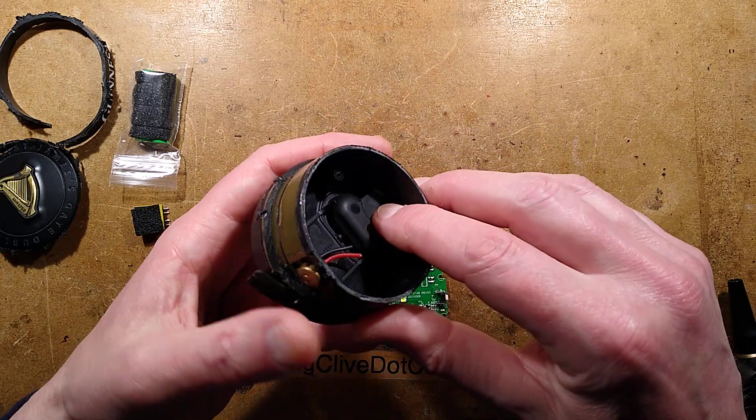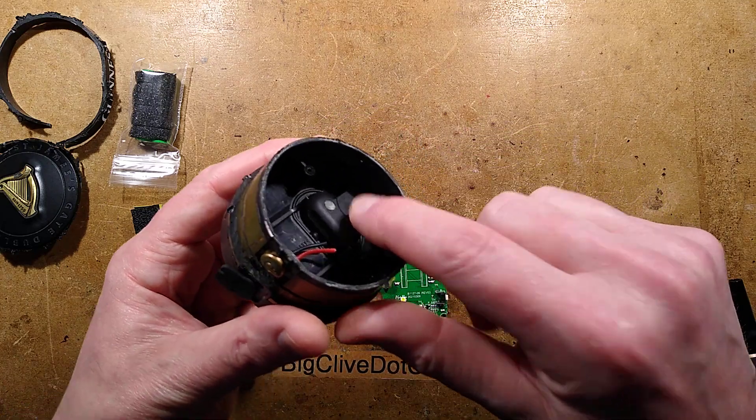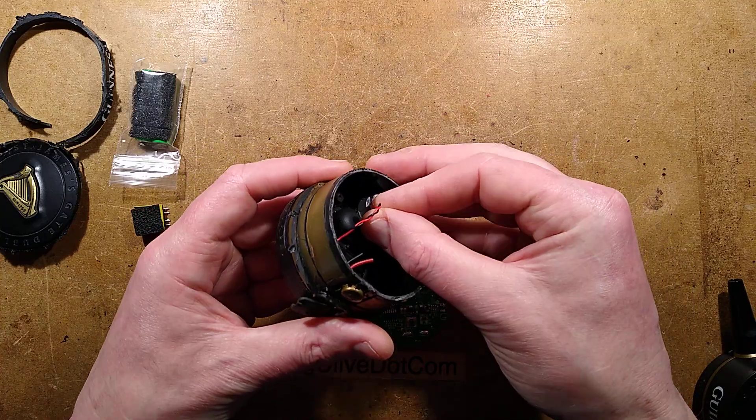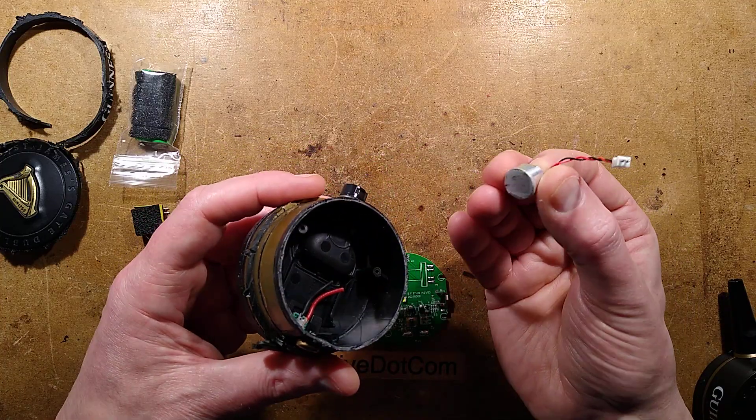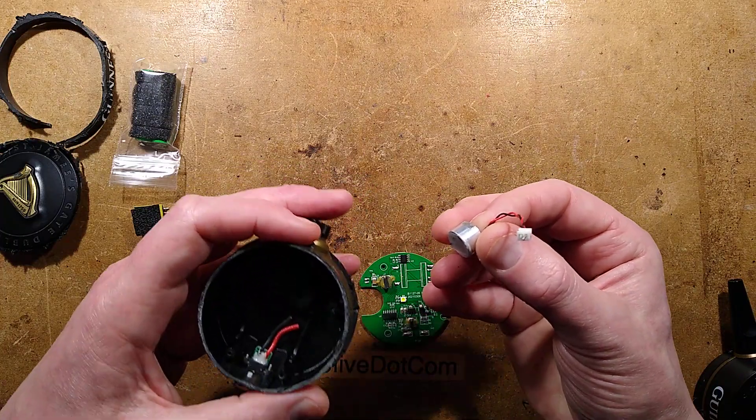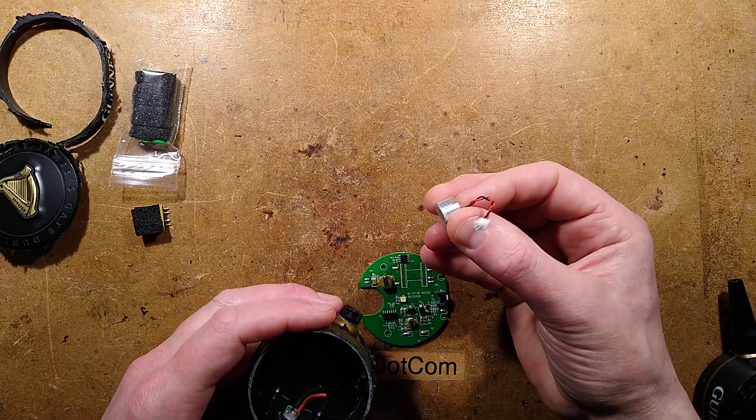The ultrasonic energy is imparted into the base. There's a little platen here. And on that platen was this ultrasonic transducer, literally just glued on with the wires coming off it. And that's the bit that energises the nucleation of the nitrogen from the Guinness.